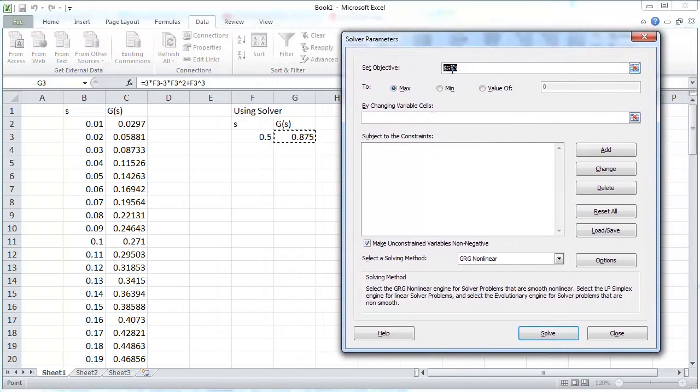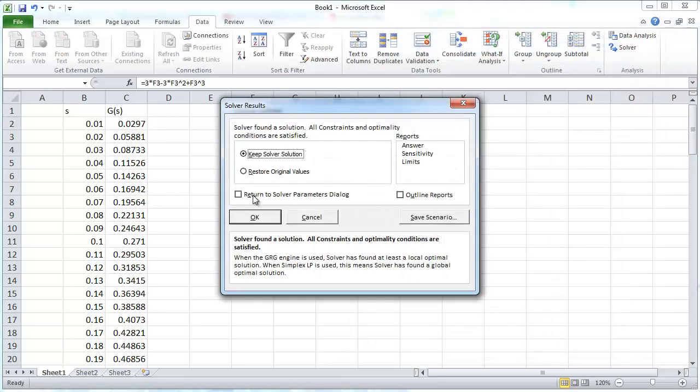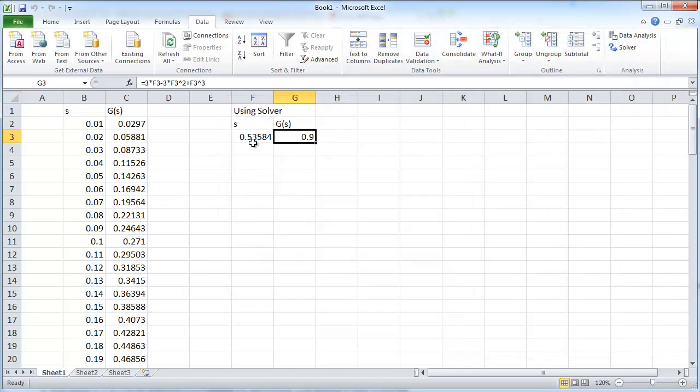So what we want to solve is we want that this CDF function, which contains that formula which we used before, takes a value of 0.9, and we want to achieve that by changing the value of s, which I started off with 0.5. Click OK, and click OK here, and you get the solution.